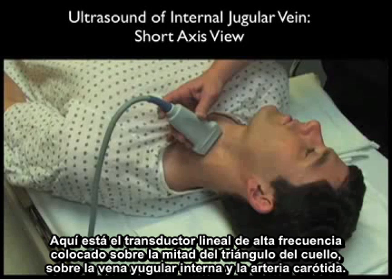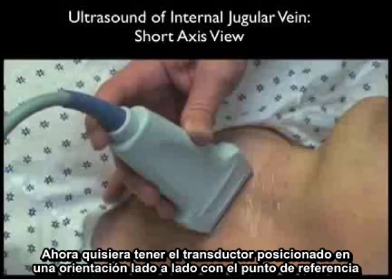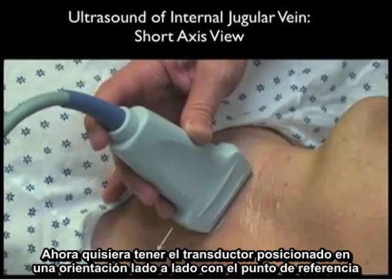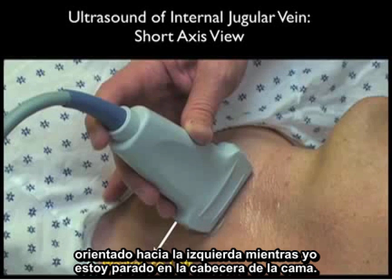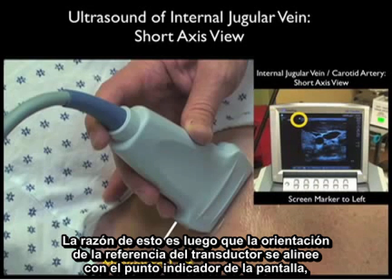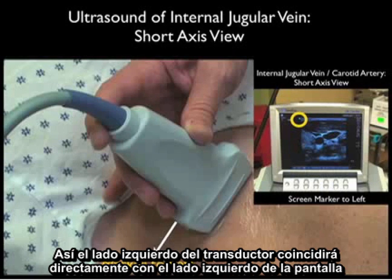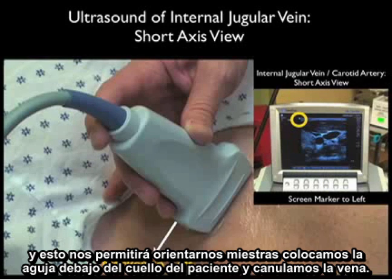Here's the high frequency linear array probe placed over the middle triangle of the neck over the internal jugular vein and carotid artery. I like to have the probe positioned in a side-to-side orientation with the marker dot oriented towards my left as I stand at the head of the bed. The reason for that is the orientation of the probe marker will line up to the orientation of the screen indicator dot, which is oriented towards the left on the ultrasound screen. Thus, the left side of the probe will orient directly to the left side of the screen, allowing us to orient ourselves as we place the needle underneath the patient's neck and cannulate the vein.